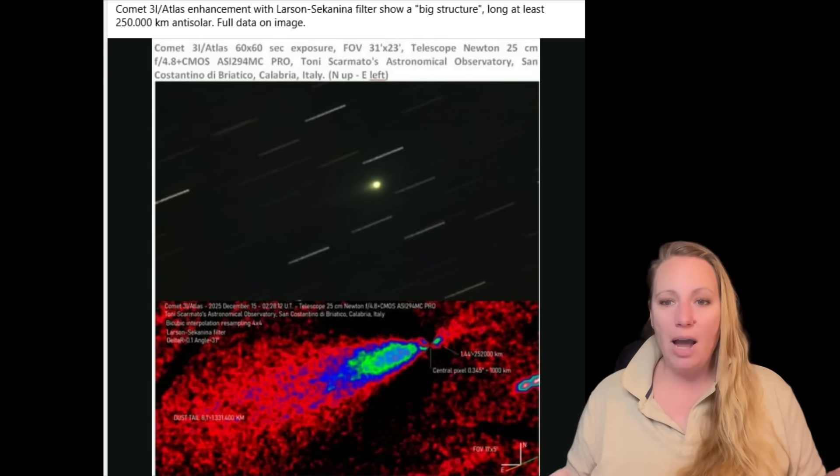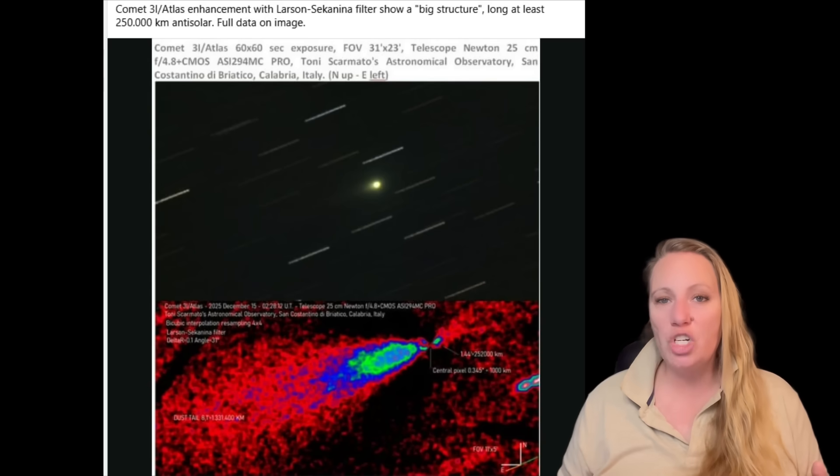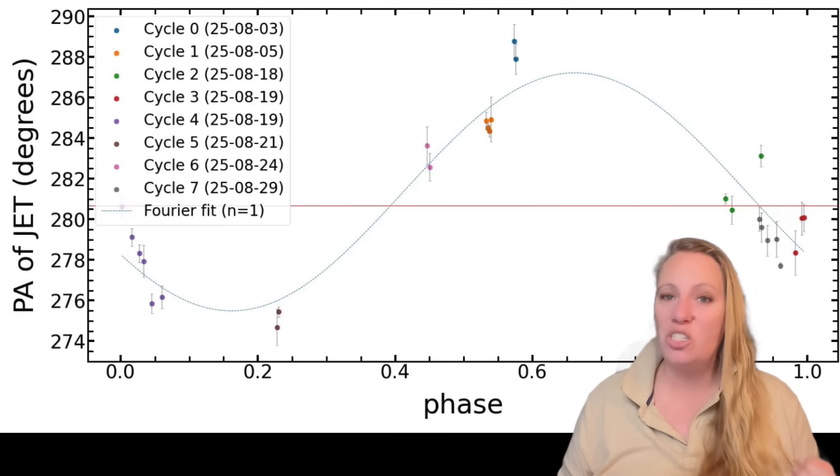So the problem is, we only had one shot at 3i Atlas to do that, but that is gone forever right now. Now the scientists say, now that it's so close to Earth, we want to get as much information from all of our observatories as we can get.